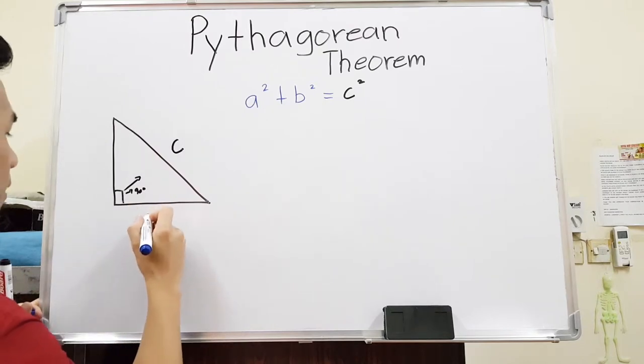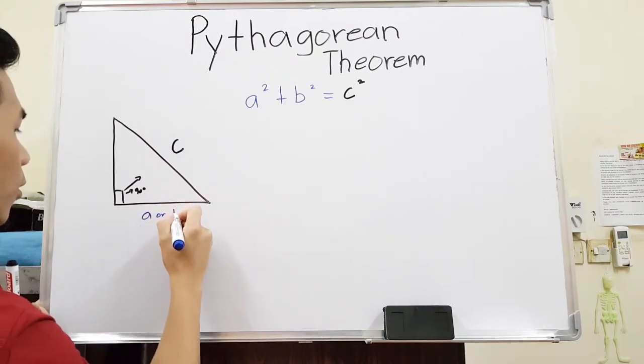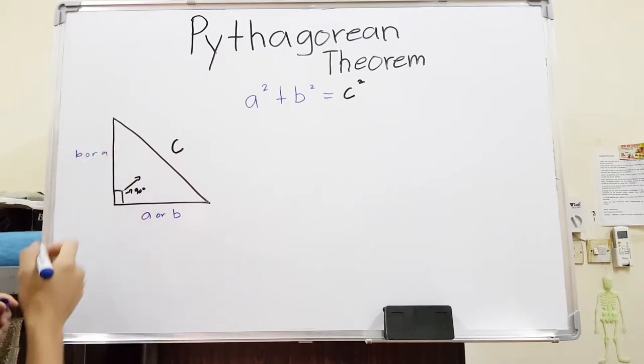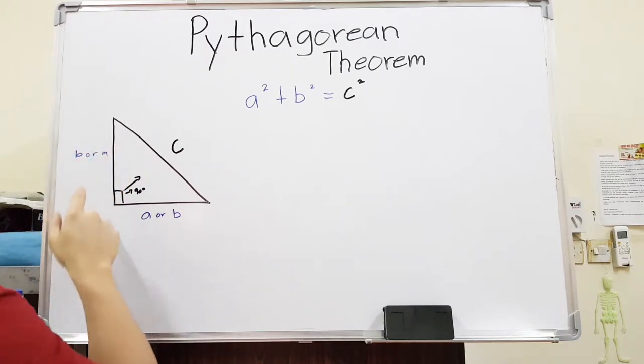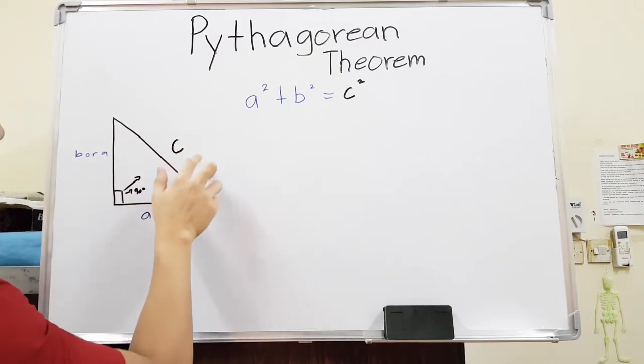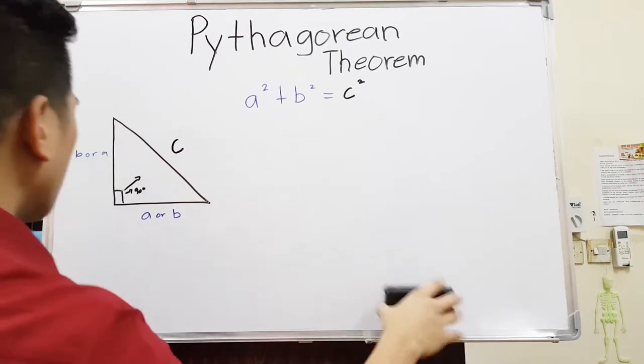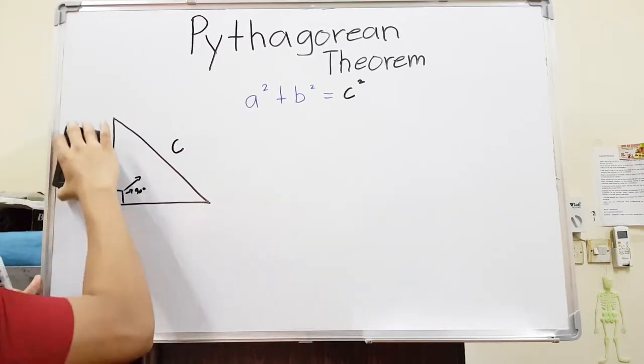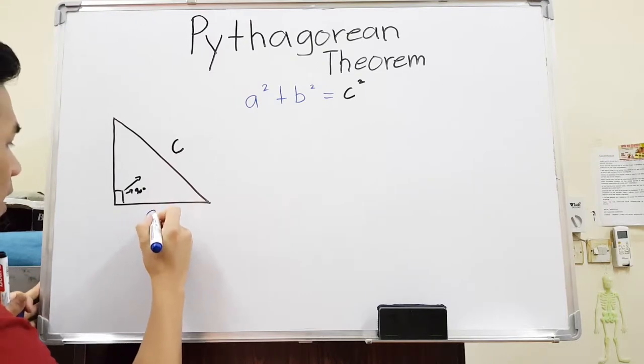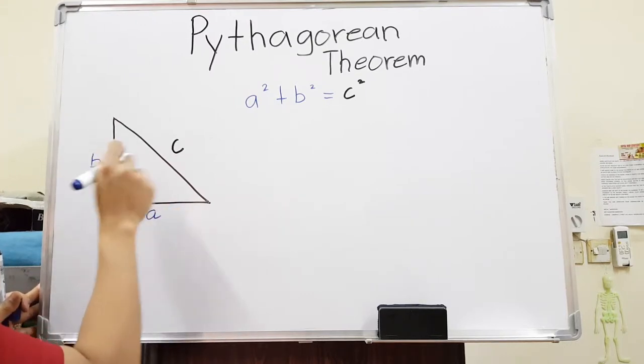When it comes to A or B, it doesn't matter. This one could be A or B or vice versa. It doesn't matter which one is A or B, but C has to be the longest side. So let's just say this is A and that is B. Whatever your A is, whatever your B is. But C must be in here.